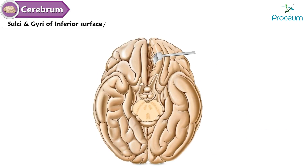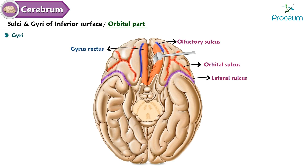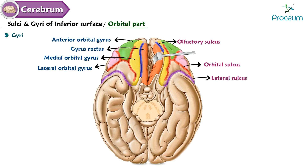On the inferior surface, the orbital part contains the following sulci: olfactory sulcus, orbital sulcus, and lateral sulcus. Its gyri include: gyrus rectus, medial orbital gyrus, lateral orbital gyrus, anterior orbital gyrus, and posterior orbital gyrus.